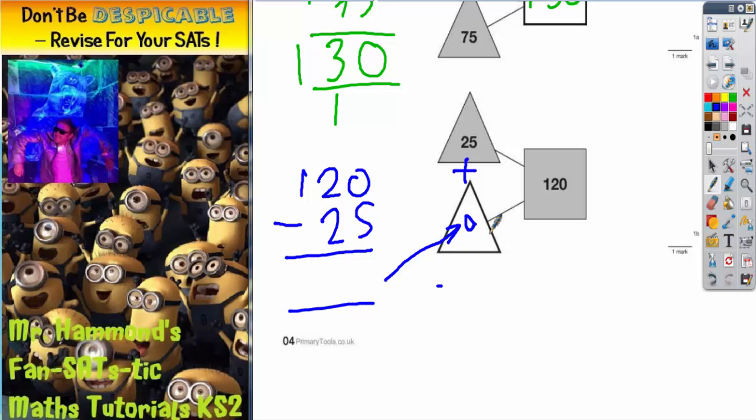So it looks as though it's going to be 95. But if you just want to do a little column method to check, 0 take away 5 you can't do, borrow 1. 10 take away 5 is 5, 1 take away 2 you can't do, borrow 1 again, and that leaves nothing. 11 take away 2 is 9, and the final column, 0 take away, well there's nothing there. So if nothing take away nothing is nothing, so it is 95.